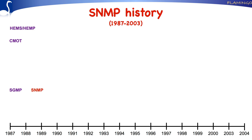Soon it was agreed that three competing proposals was a bit too much. Therefore, it was decided to stop the activities on HEMS-HEMP. Work continued on SNMP, which was considered to be the short-term solution, and CMOD, which was seen as the final solution that would eventually replace SNMP.